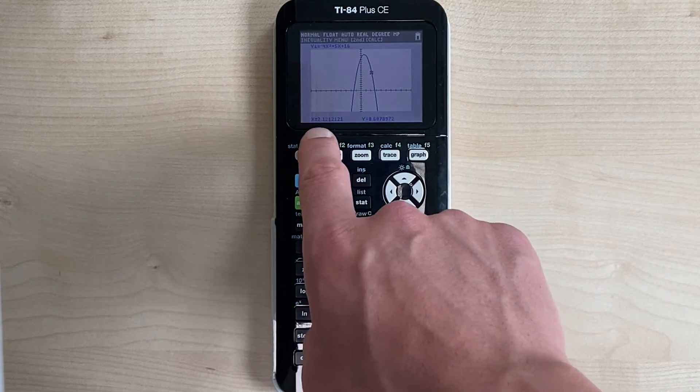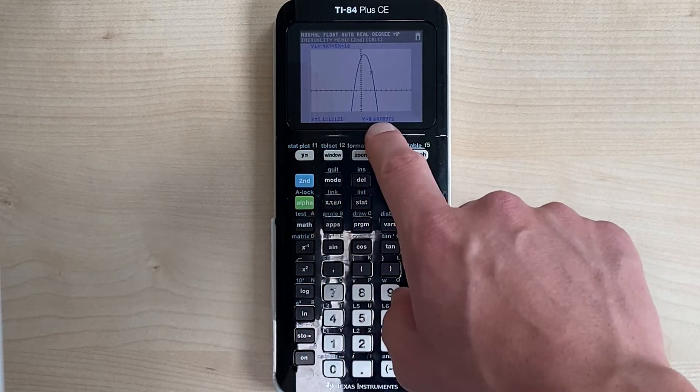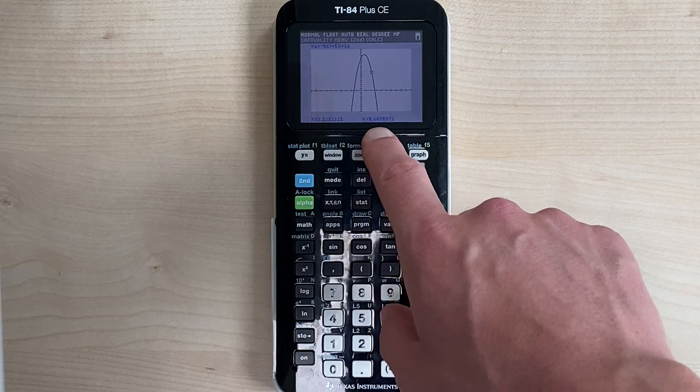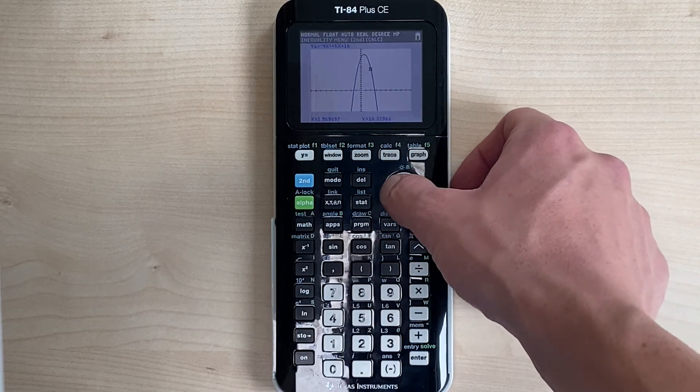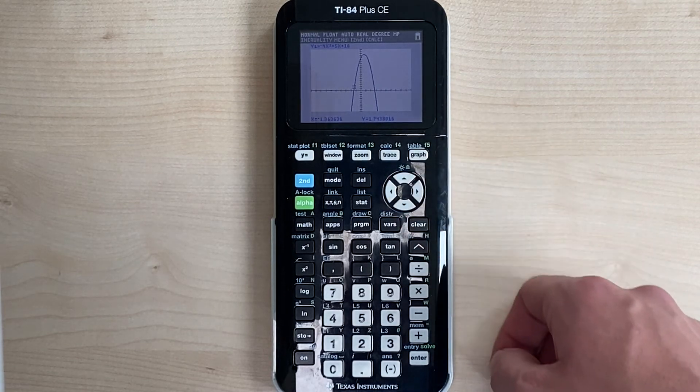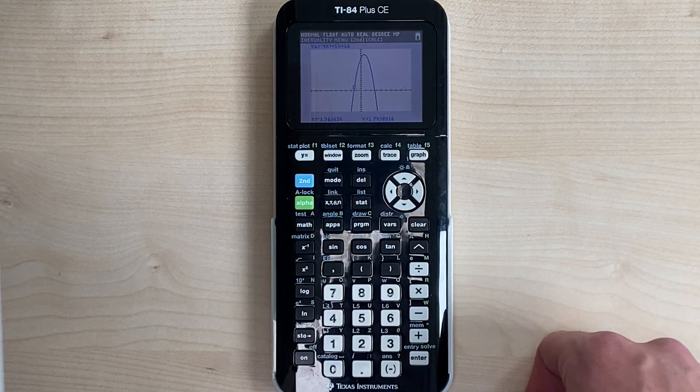Notice how we see 2.12 repeating for the x-coordinate and 8.607 for the y-coordinate. So trace is a good feature just to allow you to see some example x and y values that are on your graph.